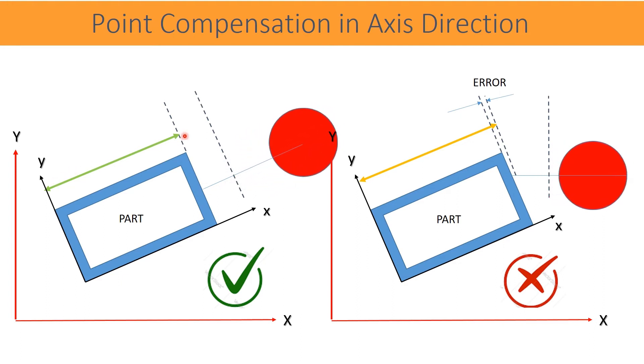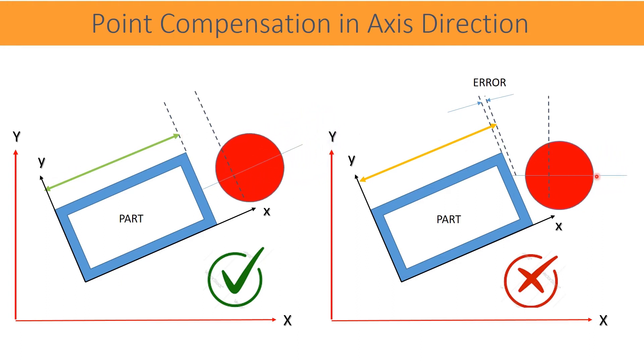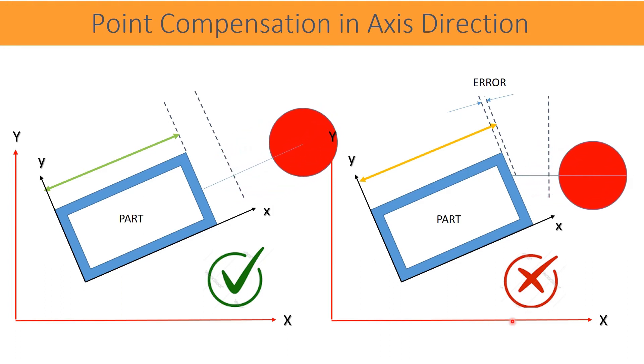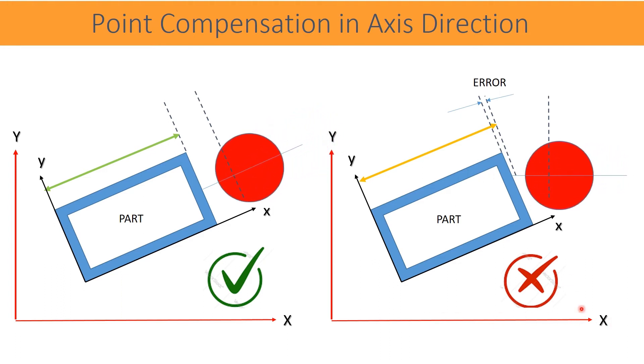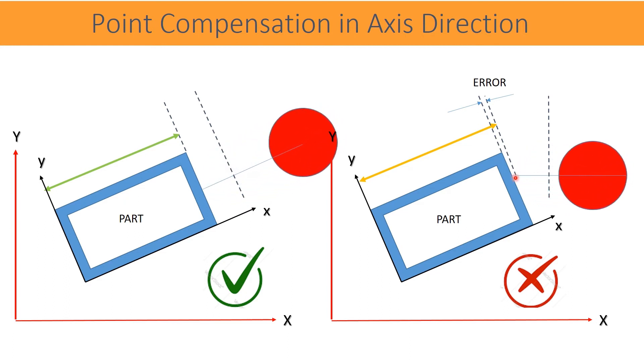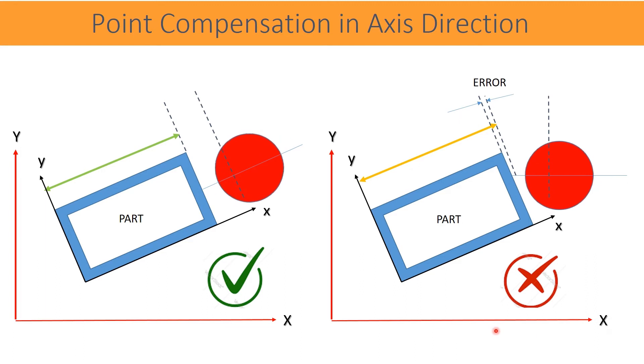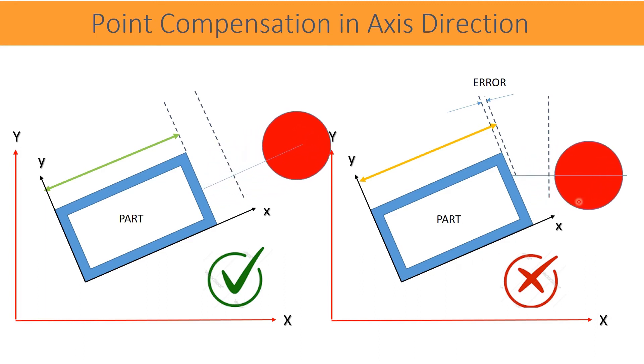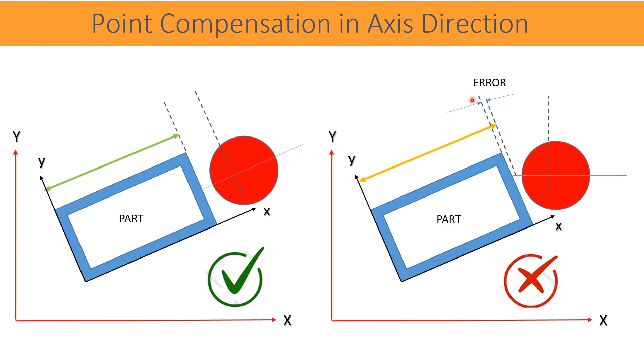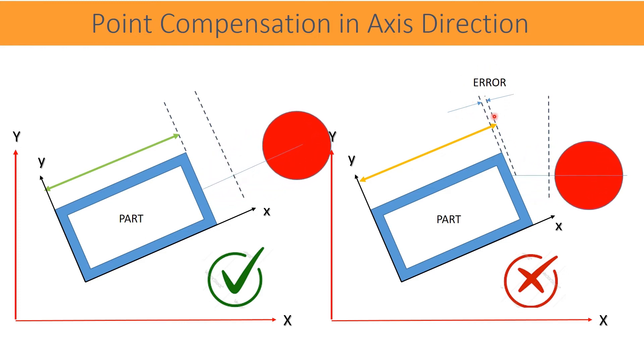In the second case, the point is not probed in the direction of the part axis. This direction is parallel to the machine axis. Therefore, the radius correction is done in the direction of the machine axis. Since machine axis and part axis are not parallel, a cosine error is produced and therefore it records wrong data or it produces error in the measurement.